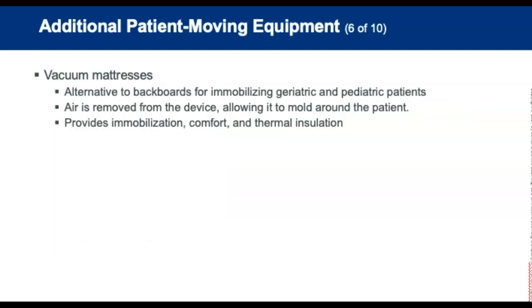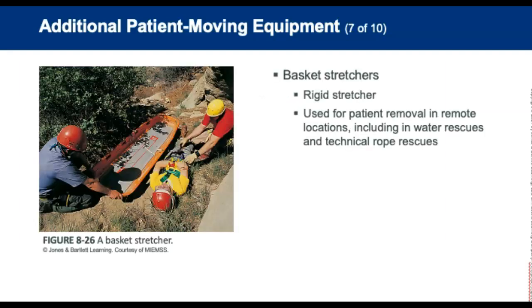Vacuum mattresses are an alternative to a backboard for immobilizing geriatric and pediatric patients. The patient is placed on the mattress and air is removed from the device, allowing it to mold around the patient, providing a high degree of immobilization, comfort, and thermal insulation. Basket stretchers are rigid and used to carry patients across uneven terrain from a remote location inaccessible to an ambulance. If the patient has a suspected spinal injury, secure the patient to a backboard and secure that inside the basket stretcher; these devices are used for technical rope rescues and some types of water rescues.